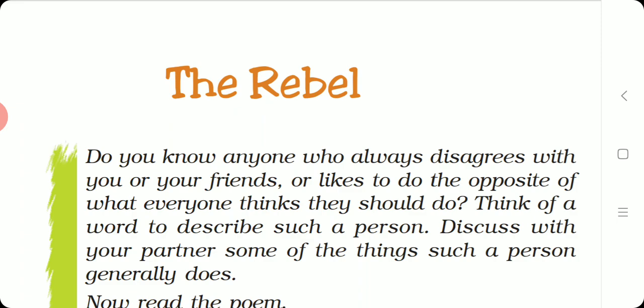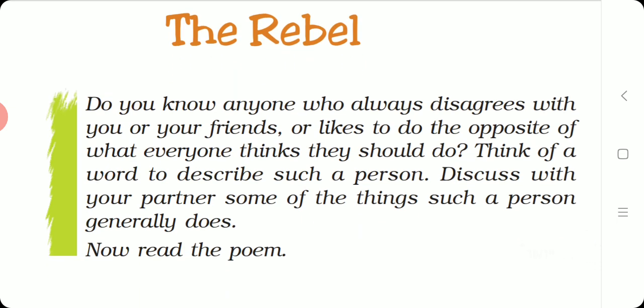Do you know who is a rebel? A rebel is a person who always disagrees with you or your friends, or likes to do the opposite of what everyone thinks they should do. Think of a word to describe such a person. A rebel always goes opposite to what you think or what you do. They are going against the stream. They do not accept things easily. They may put a lot of questions.